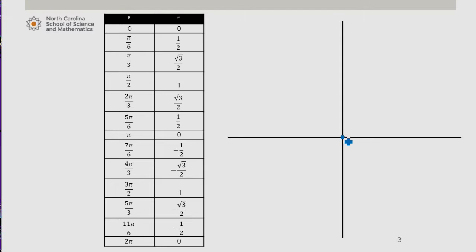We have a value of 1 half. We'll say this is 1, so that's 1. At pi over 6, I have a radius of 1 half.